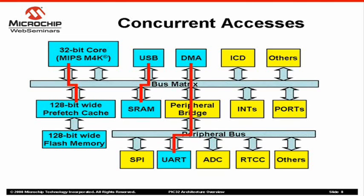While the CPU is fetching instructions from Flash via the prefetch cache module, the USB may read or write SRAM, and at the same time, the DMA may read data from the UART module. In this example, all three paths are separate and there will not be any conflict or delay. If the CPU were to access SRAM while the USB is in the middle of accessing SRAM, there will be a conflict and the bus matrix will arbitrate and allow one to complete before the other can continue.